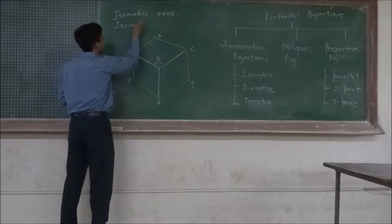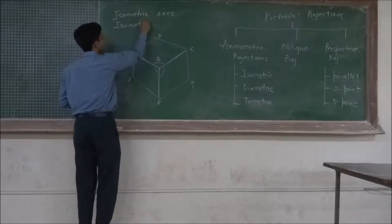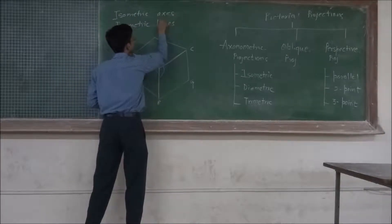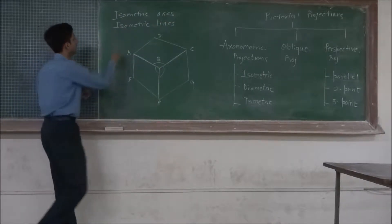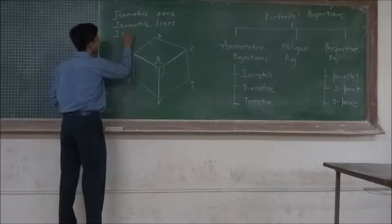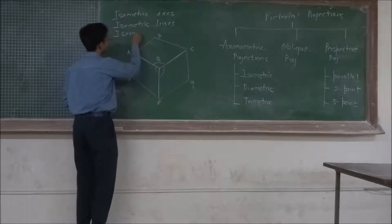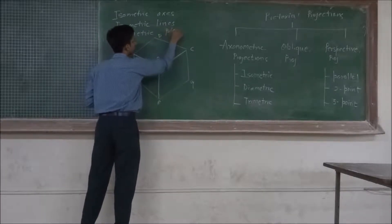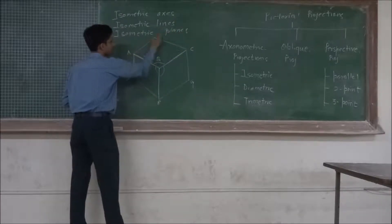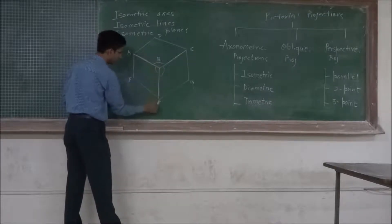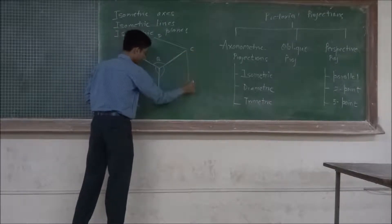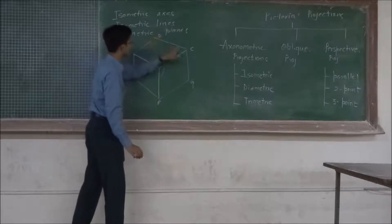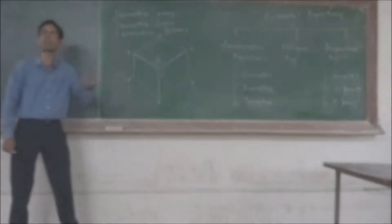The lines which are parallel to these three basic isometric axes are called isometric lines, and the corresponding planes are called isometric planes. The planes AB-CF, BC-G, and ABCD — these three are isometric planes.